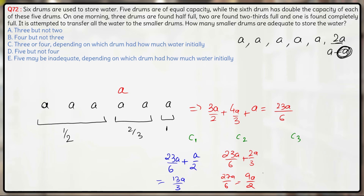Finally, in Case 3, we assume the bigger tank is completely full. So the total capacity will be 23A/6 plus A. This comes out to be 29A/6.